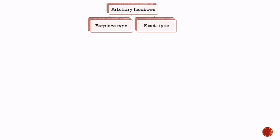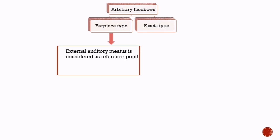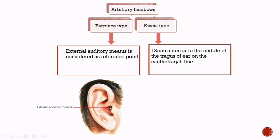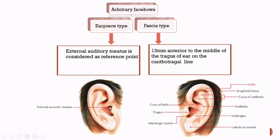Arbitrary face bows are classified as earpiece type and fascia type. In the earpiece type, the external auditory meatus is considered as the reference point to determine the center of condylar rotation. Whereas in the fascia type, the center of condylar rotation is arbitrarily marked as 13 mm anterior to the middle of the tragus of the ear, on the line drawn from the outer canthus of the eye to the middle of the tragus of the ear, known as the cantho-tragus line.